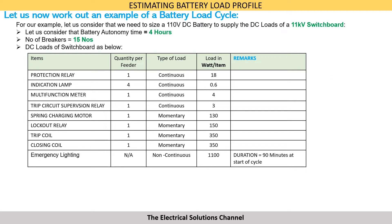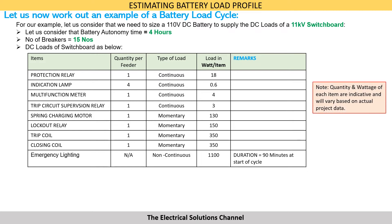The loads include one protection relay, indication lamps, multifunction meter, trip circuit supervision relay, spring charging motor, lockout relay, trip coil, closing coil, and emergency lighting of the switchgear room where the 11 kV switchboard is located. The quantity of these loads in the switchboard is as given in the table, and the type of load — whether continuous, momentary, or non-continuous — is indicated in the table along with the voltage of each load.